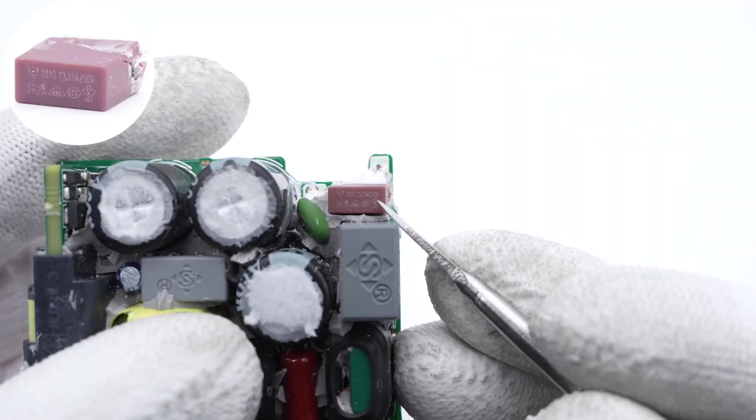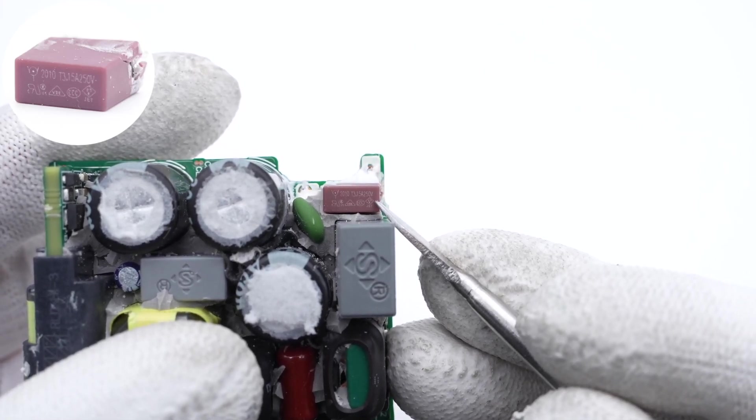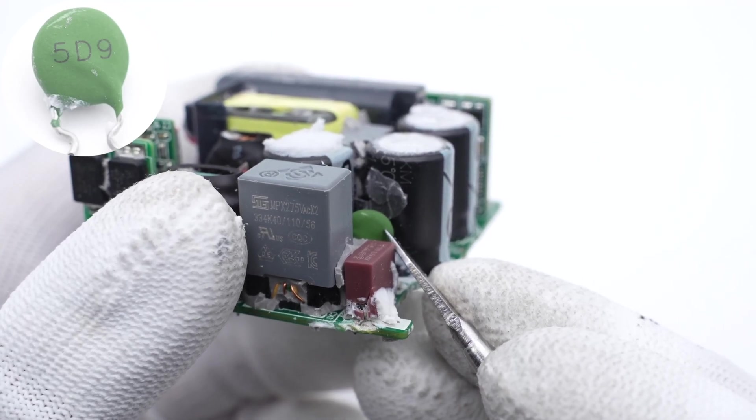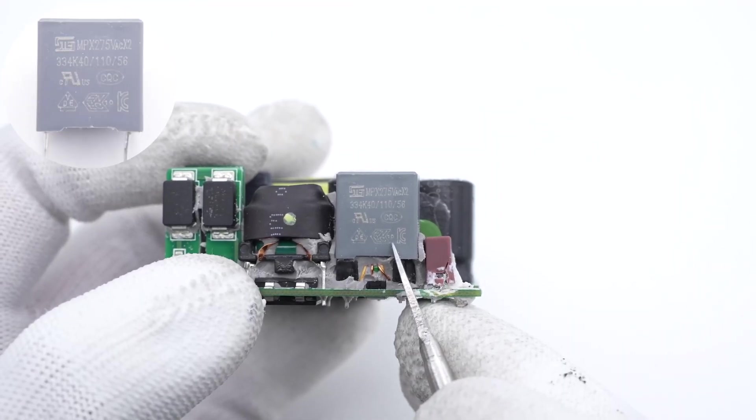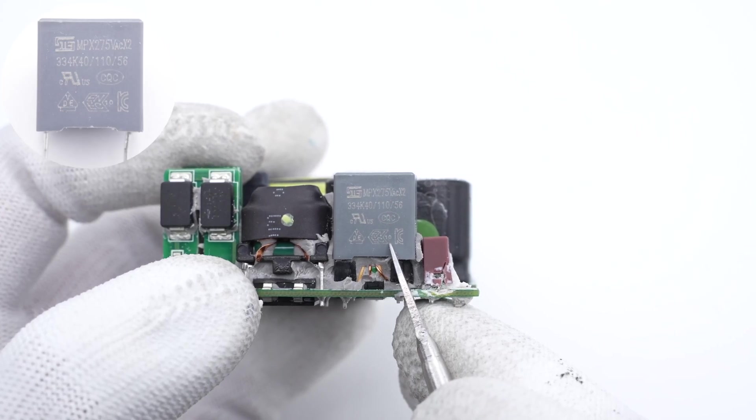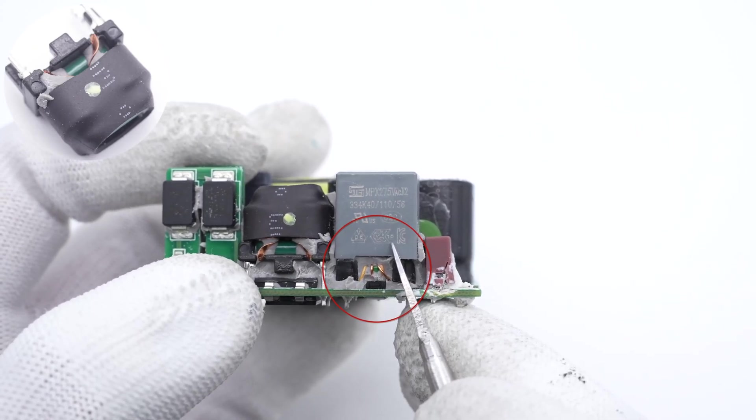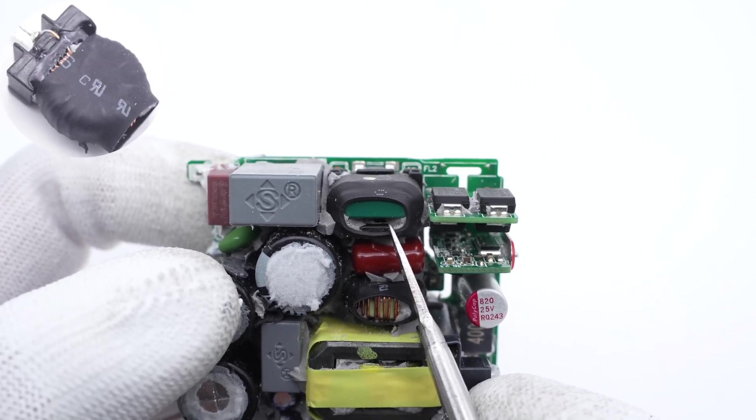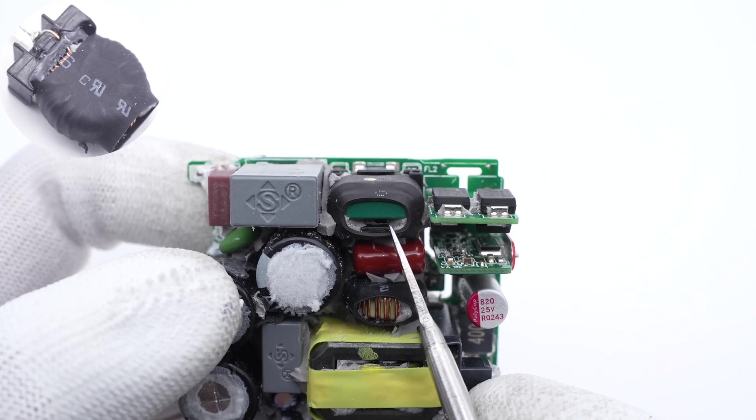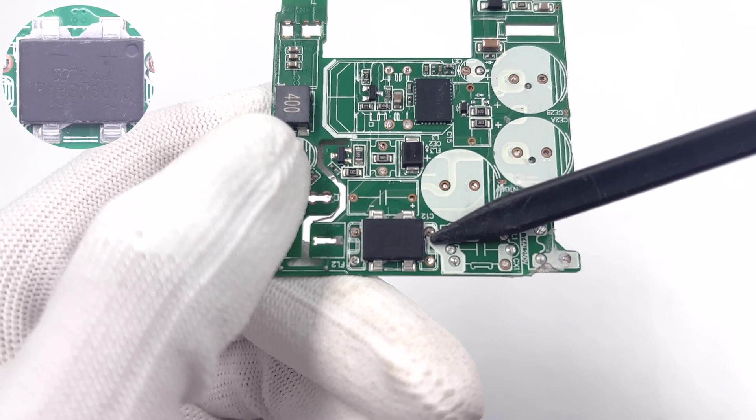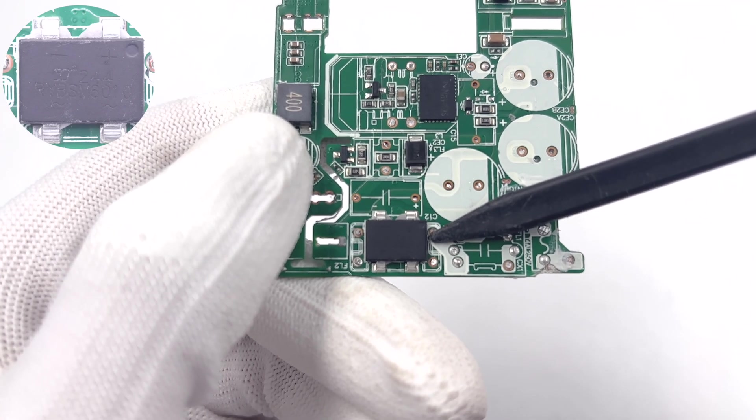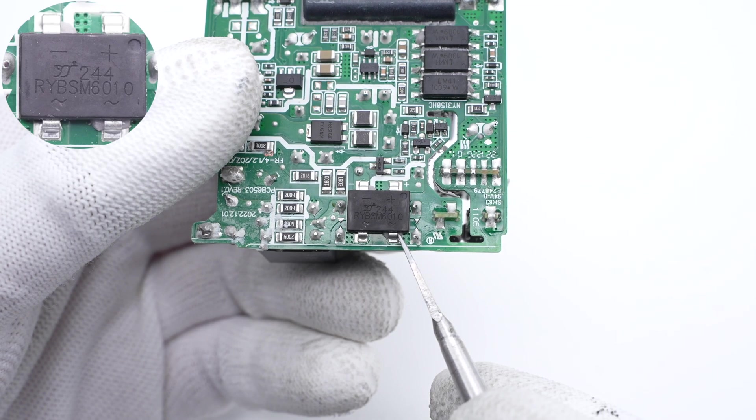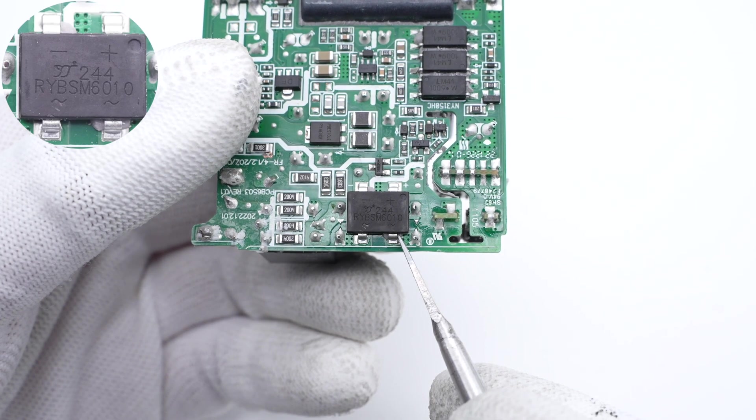The time delay fuse is from Waterfuse, 3.15A 250V. The green thermistor is used to suppress the surge current. The safety X capacitor is from STE, 0.33μF. And the first common-mode choke is under this capacitor. The second common-mode choke is wound with flat copper wires and insulated with a heat shrink tube. The bridge rectifier is from Yang Jie and is placed under the common-mode choke, 1000V 6A. The other same bridge rectifier is soldered on the back to dissipate heat evenly.